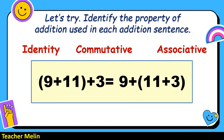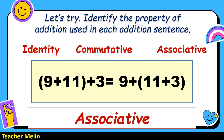How about 9 plus 11 plus 3 equals 9 plus 11 plus 3? On the left side, 9 and 11 are grouped. On the right side, 11 and 3 are grouped. This is an associative property of addition.